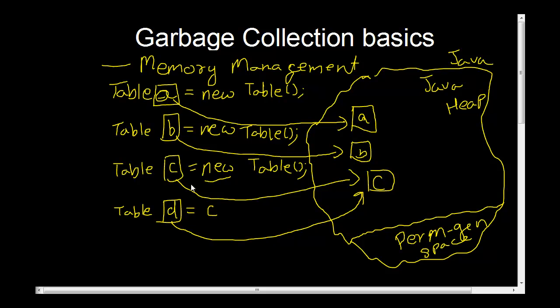See what's going on? There are four references and three objects in the memory. Two of those references of table are pointing to the same object. Let me do something else. Let me do C equals B.